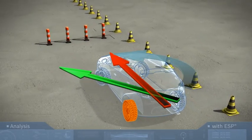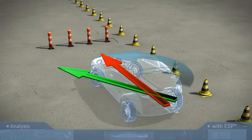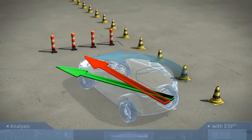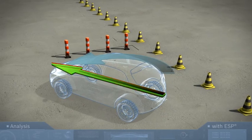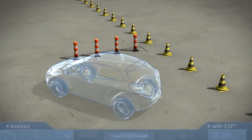In a split second, ESP briefly brakes the left rear wheel very sharply. This produces the desired countering force so that the vehicle responds as the driver intended.